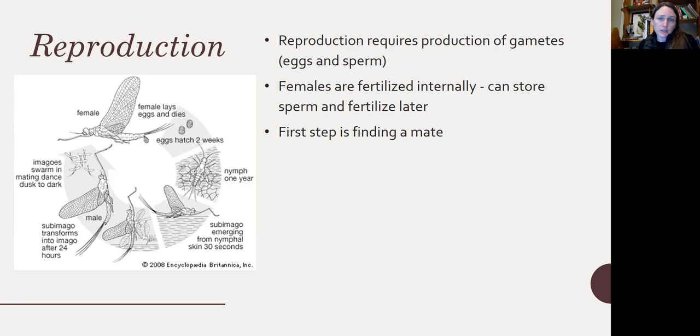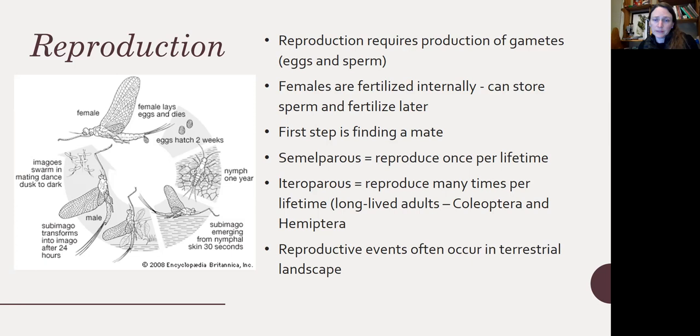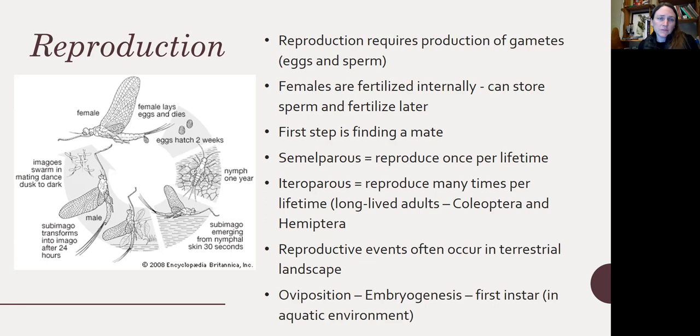The first step in reproduction is finding a mate. Organisms that reproduce once per lifetime are called semelparous, and organisms that can reproduce many times per lifetime are called iteroparous. Some long-lived adults, particularly beetles and true bugs, are iteroparous. Reproductive events often take place in the terrestrial landscape rather than the aquatic one — basically from oviposition (laying eggs) to embryogenesis (development of the embryo) to the first instar, which typically hatches in the aquatic environment.